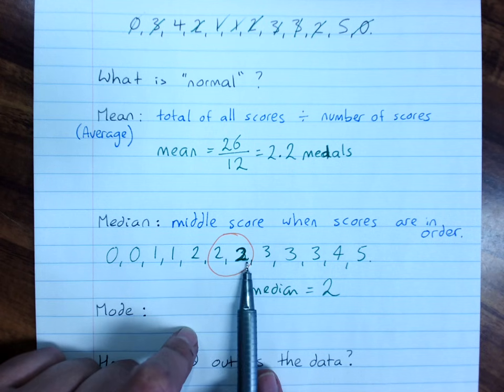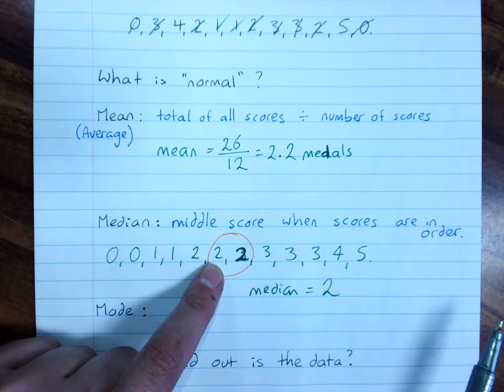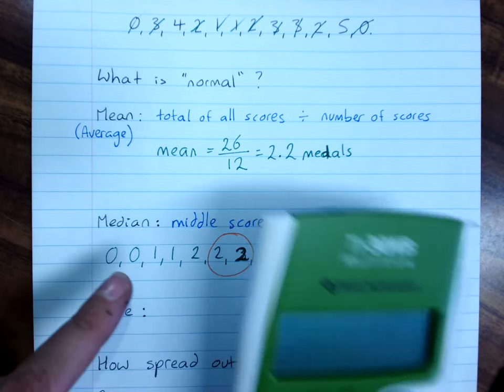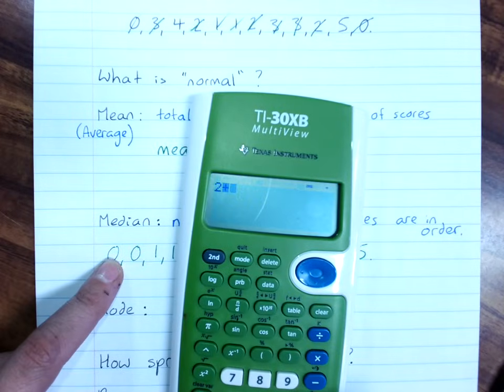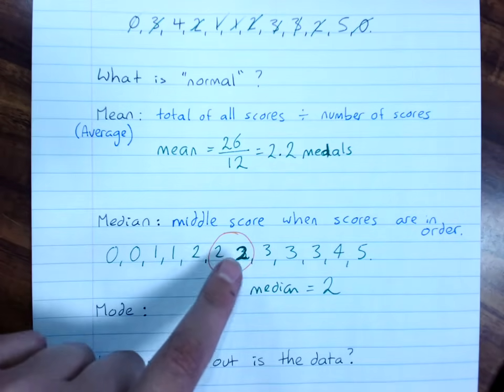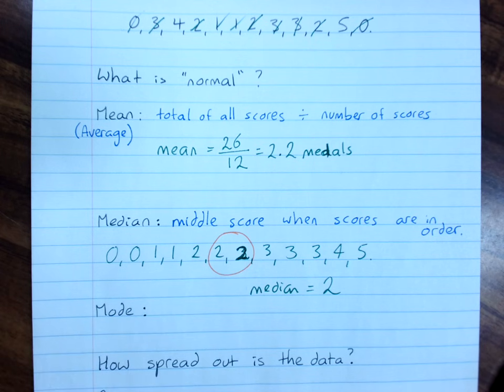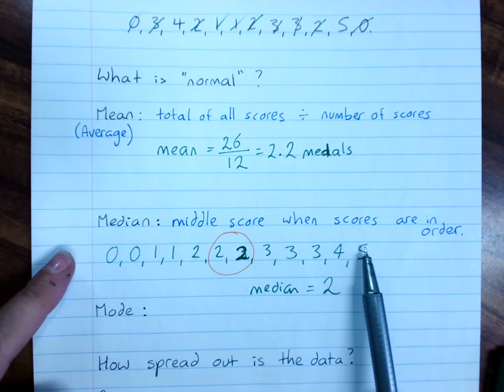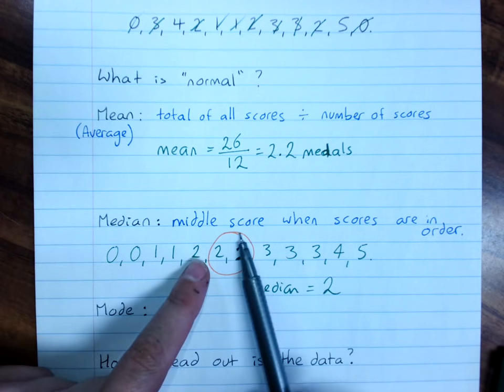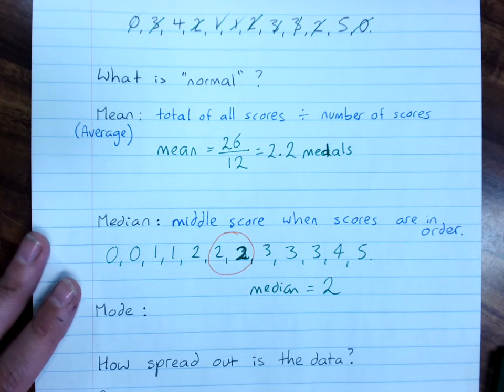But if these were really different, if those had been two and three like I thought it was, then you'd add them together. 2 plus 3 equals 5, and divide by 2. So you'd find the average. If that had been three, this would be 2.5 as the median. So your median is the middle score if it's an odd number of scores, or the average of your two middle scores if it's an even number of scores.